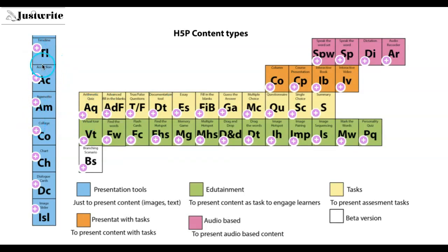When you click on each plus sign on these content types, you will see details about that particular content type — either a tutorial video or a link to a tutorial for that content type. So you can click on each of these buttons and see the details.